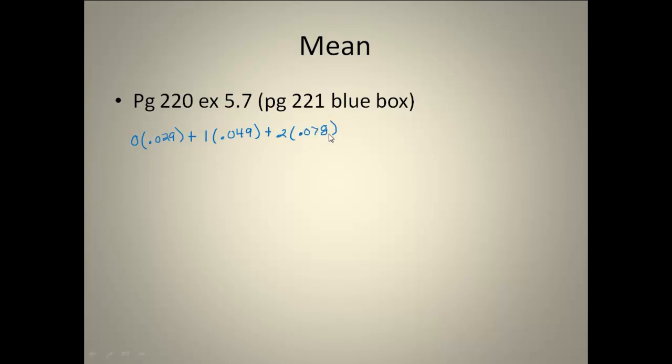There's a 0.078 chance that two tellers are busy. Three tellers has a 0.155. And four tellers is 0.212. Five tellers is 0.262. And six tellers is 0.215.